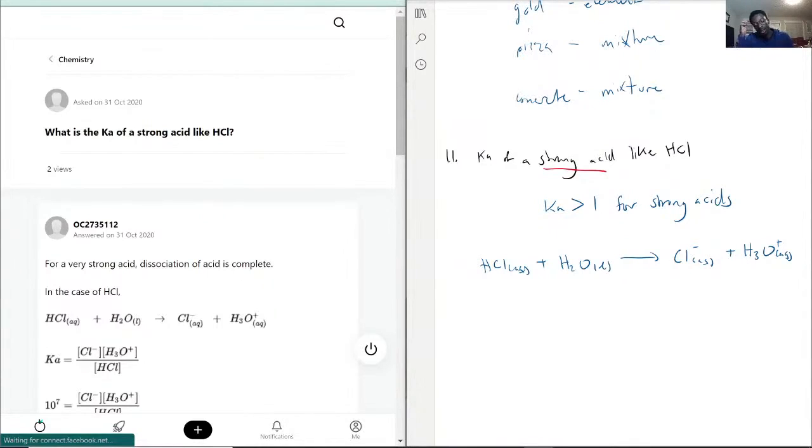That means the Ka value would be greater than one. We don't know exactly, we just know it's greater than one because of the fact that it's a complete dissociation. Whatever value you have of HCl will be the same exact value you have of Cl- and H3O+ once you're done.